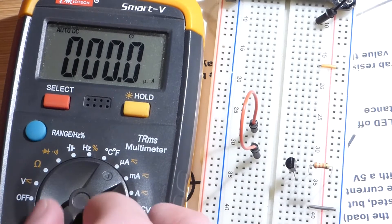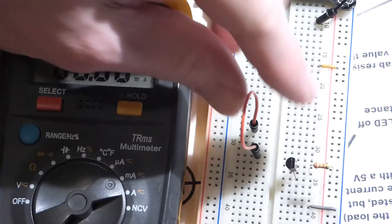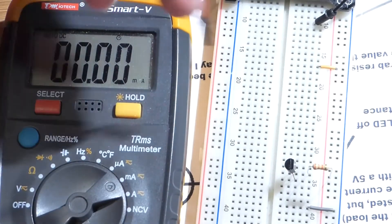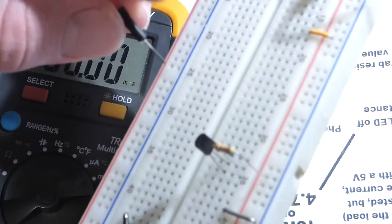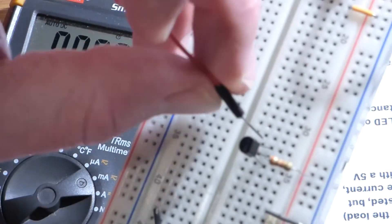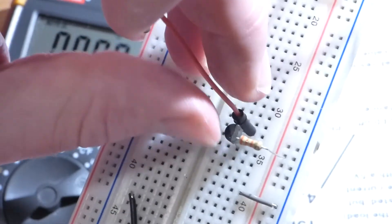Our next reading is going to be in the milliamp range. We're going to take this jumper here and connect it. I'll lift this up so you can see it easier. We're going to connect it to the collector, the top pin of the transistor.